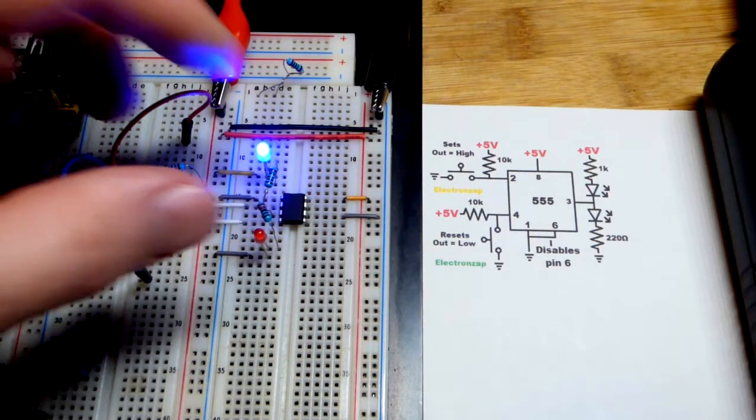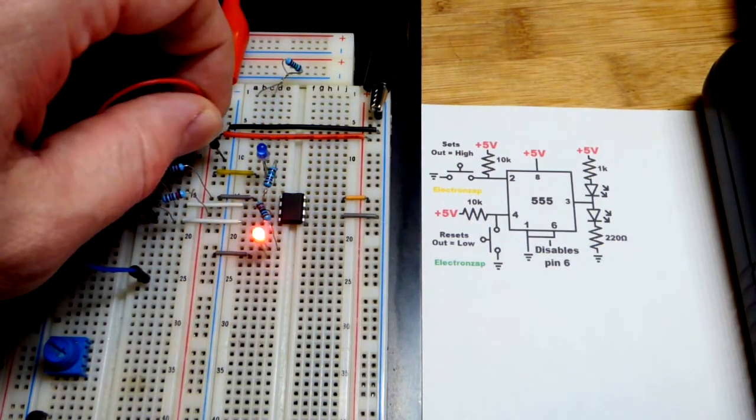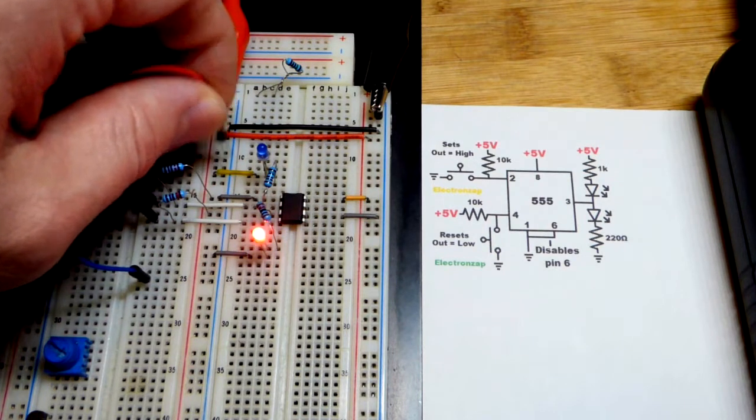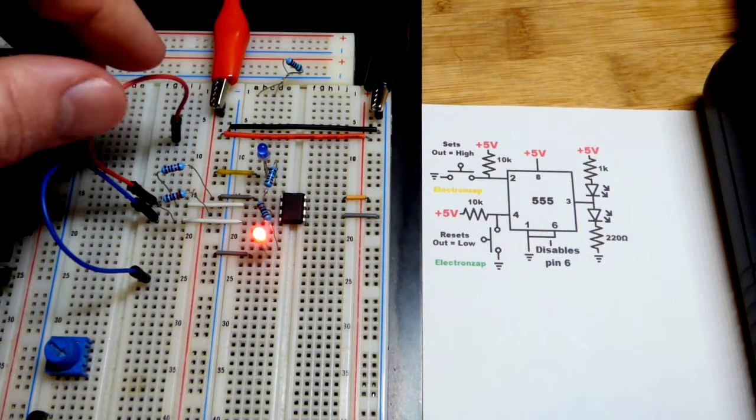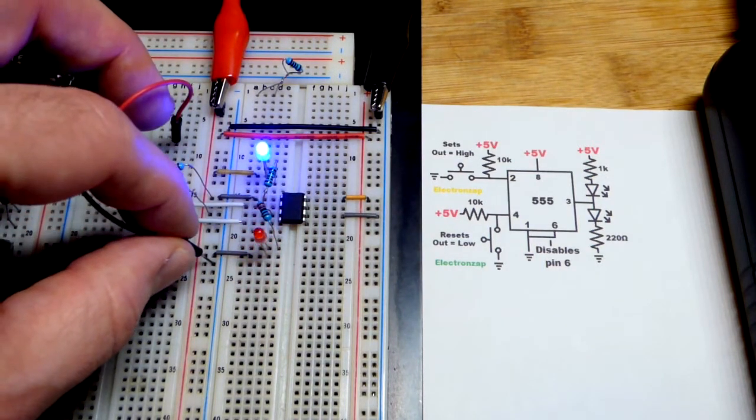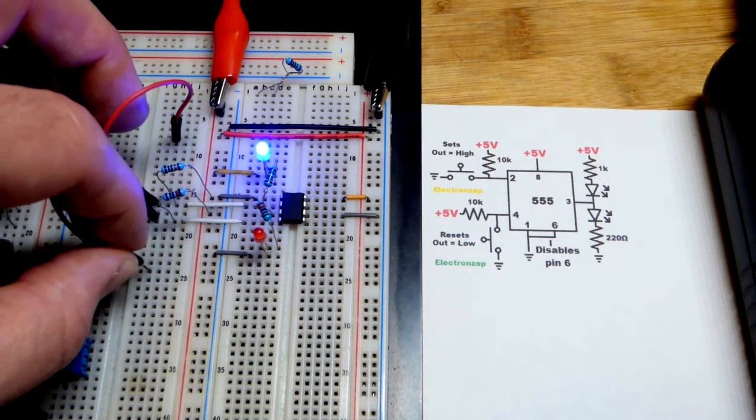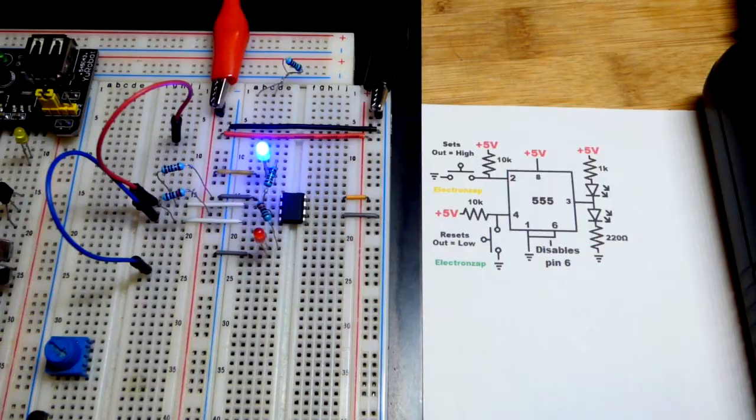It's going to stay low until we give a low input signal. We're going to connect the trigger pin directly to ground, that's our set pin, and now the output's high. So the output's going to stay high until we give a low signal, connect the reset pin, pin number 4, directly to ground, and now the output is low. So it stays in one of two states bi-stable unless we force it to change.